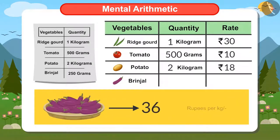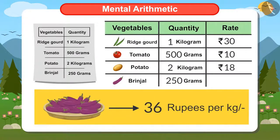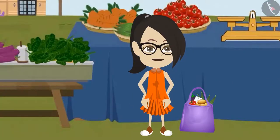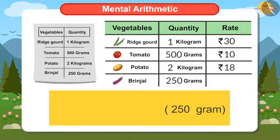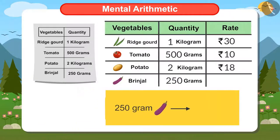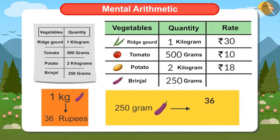Brinjal costs 36 rupees a kilo. What do I have to do to find the price of 250 grams of brinjal? Can you try and tell me? 250 grams is a quarter of a kilo, so to find the value of 250 grams of brinjal, we have to divide the price of a kilo of brinjal by 4. That means 36 divided by 4. Four nines are 36, which means the price of 250 grams of brinjal is 9 rupees.